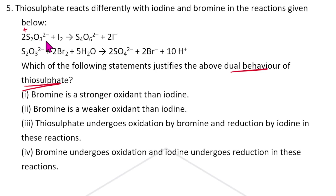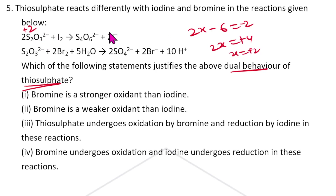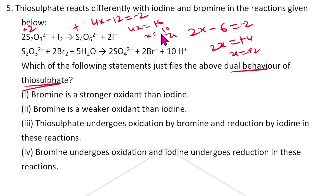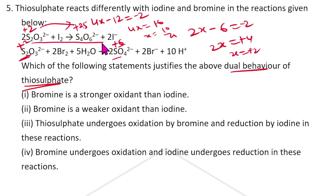In S₂O₃²⁻, x = +2. In S₄O₆²⁻: 4x − 12 = −2, so 4x = 10, x = 2.5 — meaning it is oxidized by I2. Here oxidation state goes from +2 of S₂O₃ to +6 in SO₄²⁻ — a 4-unit increase. With I2, only 0.5 unit increase occurs, but Br2 is a stronger oxidizing agent than I2.